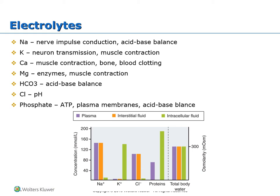Looking at the anions — the negative ions — bicarbonate plays a key role in acid-base balance. Chloride is the most abundant extracellular ion and takes part in formation of hydrochloric acid in the stomach, acting as an active participant in regulating fluid pH. Phosphate is essential in carbohydrate metabolism, bone formation, and acid-base balance.